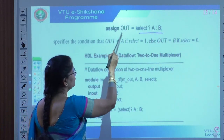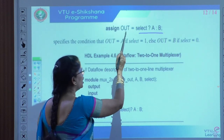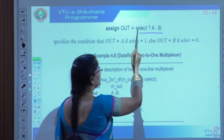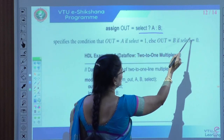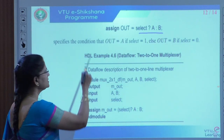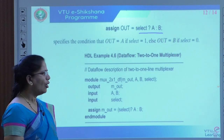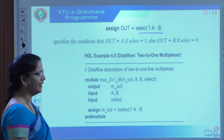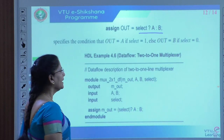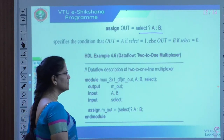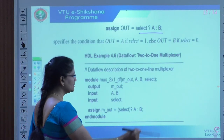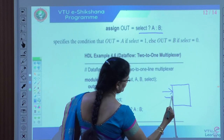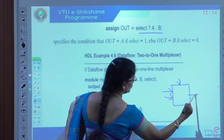Out is assigned to A if the select line is 1. If the select line is 0, out will be B. That is what we are showing using the conditional operator. Let us see one example in data flow model: a 2-to-1 multiplexer. Two inputs and one select line and one output. Input A, input B, select line, and output M_out.